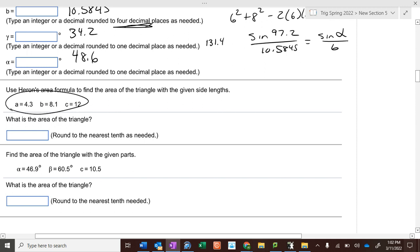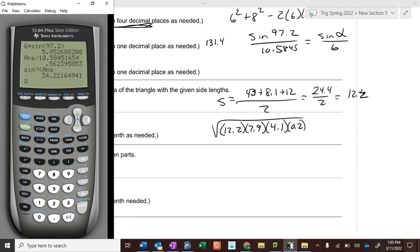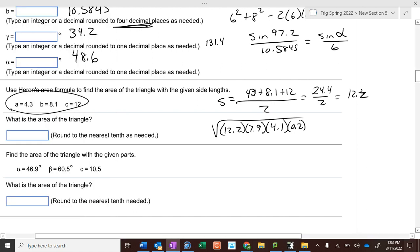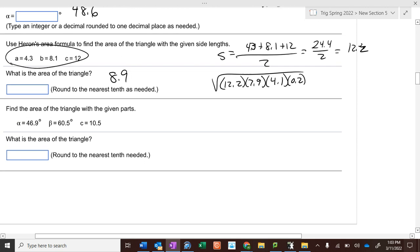Area of a triangle. We have three sides. What formula do we use? Heron's formula. s equals 4.3 plus 8.1 plus 12, all divided by 2, which is 12.2. So the area equals the square root of 12.2 times 12.2 minus 4.3, which is 7.9, times 12.2 minus 8.1, which is 4.1, times 0.2. If we take the square root of all those, we get 8.9, the area of this triangle.